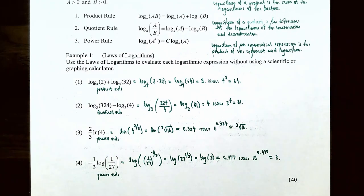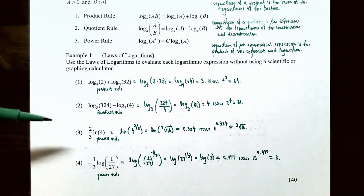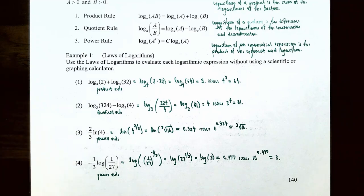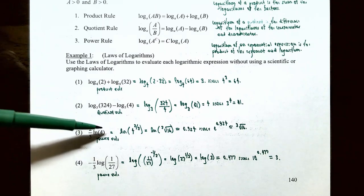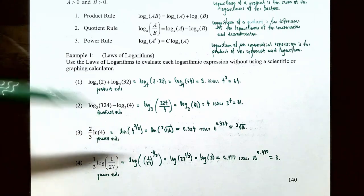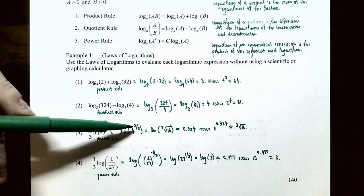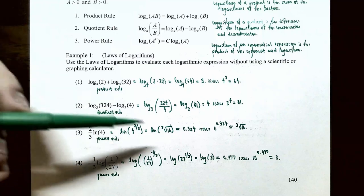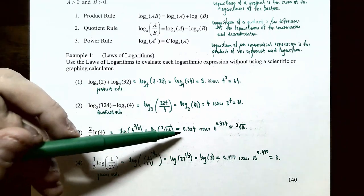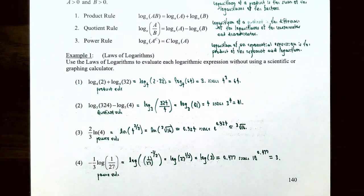For problems three and four we need a scientific or graphing calculator. Number three: evaluate two thirds times natural log of 4. There's a coefficient in front of the logarithm, so use the power rule — rewrite two thirds as an exponent on base 4: natural log of 4 to the two-thirds. Four to the two-thirds is the cube root of 16, so this becomes natural log of the cube root of 16, which is approximately 0.924.